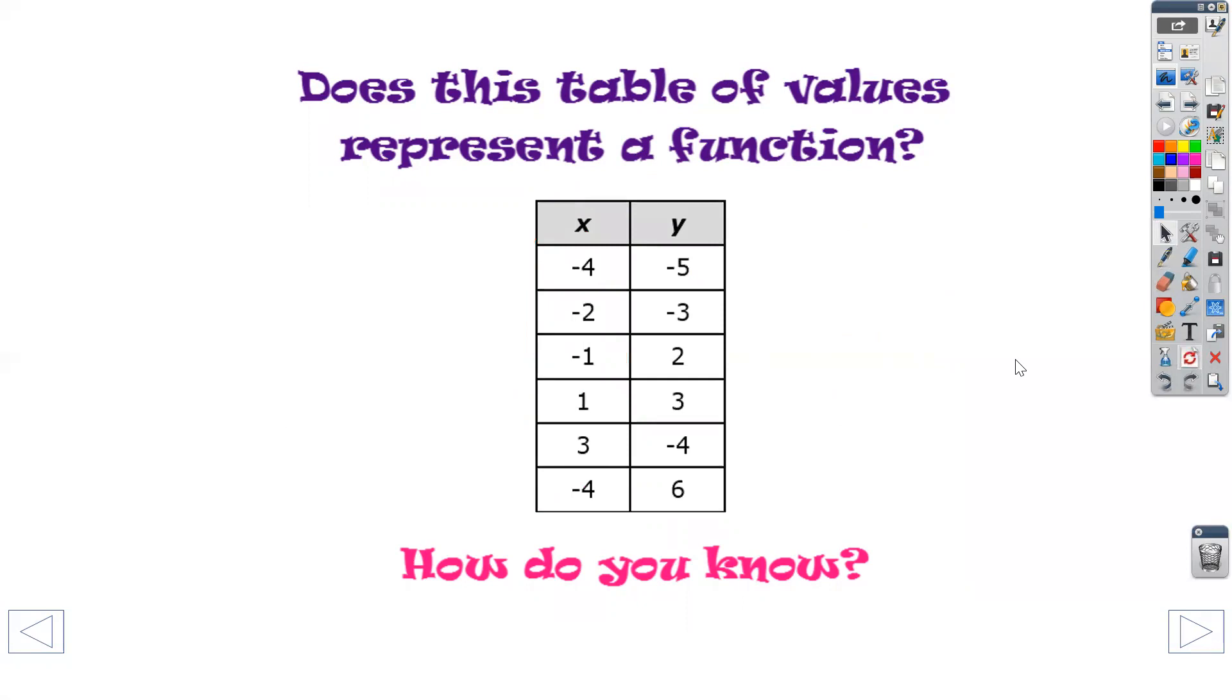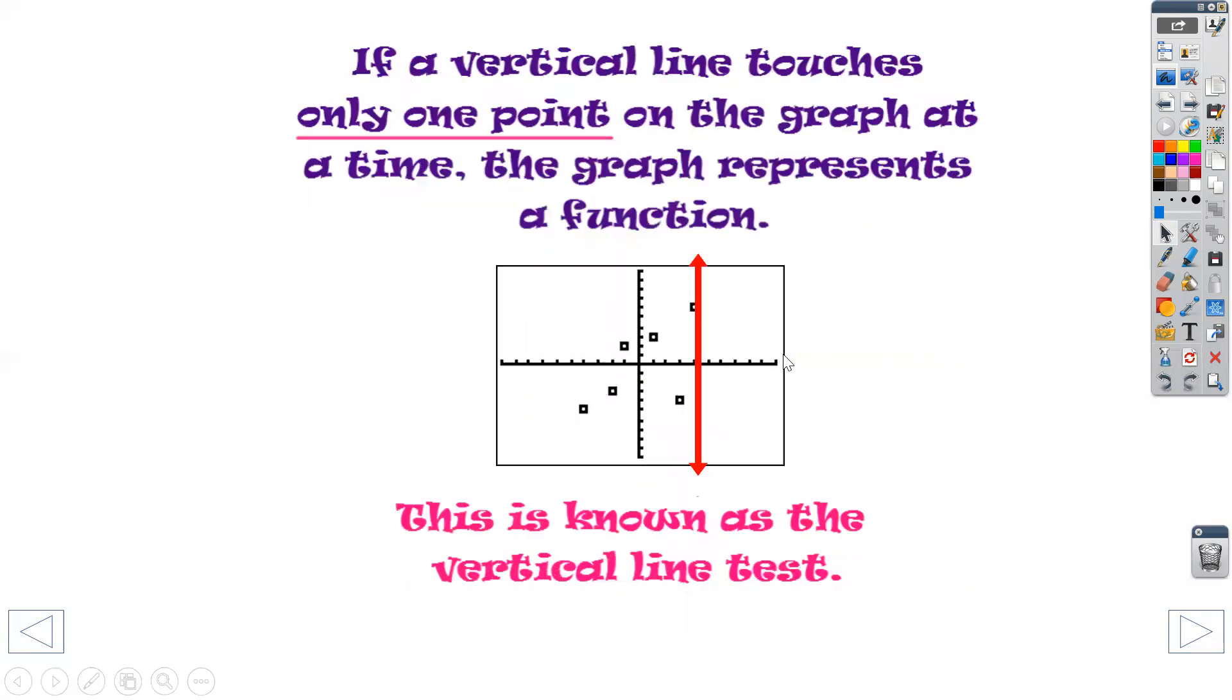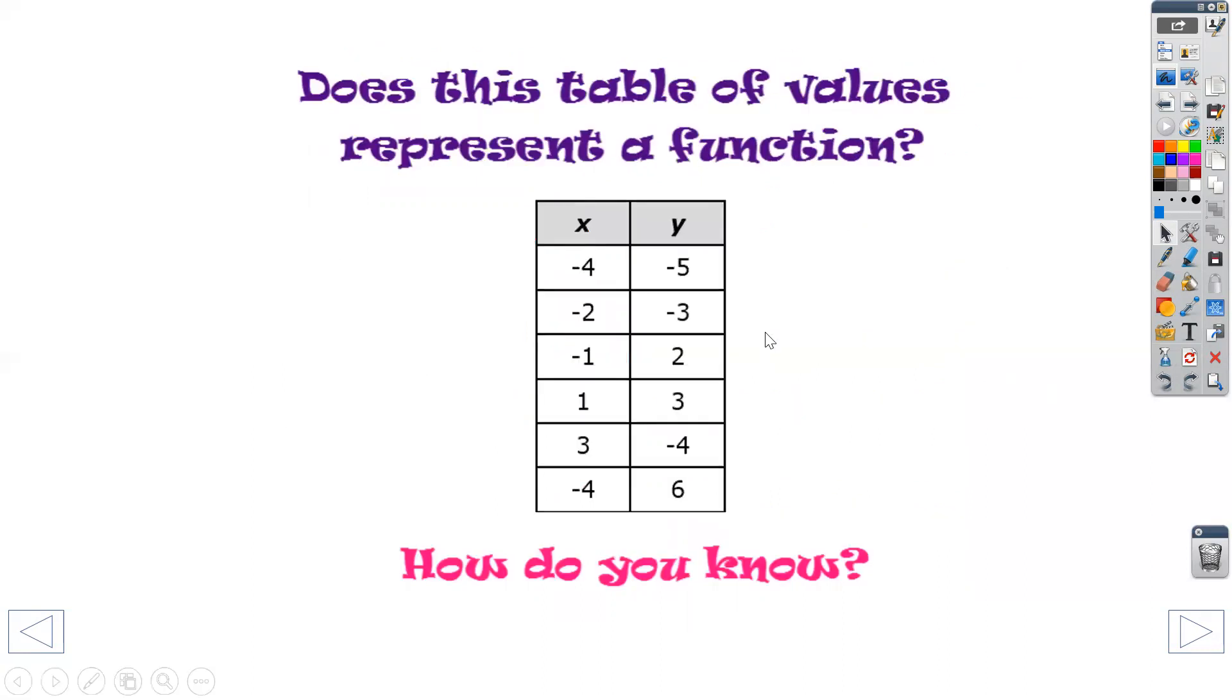And if you looked at it from a table, you would see that coordinate. So if I had a table drawn and I had X at negative 4, I would have a dot up here at 6 and I would have a dot down here at negative 5. So if I drew my vertical line test, notice it went through two points at the same time. So therefore, it would not pass the vertical line test.